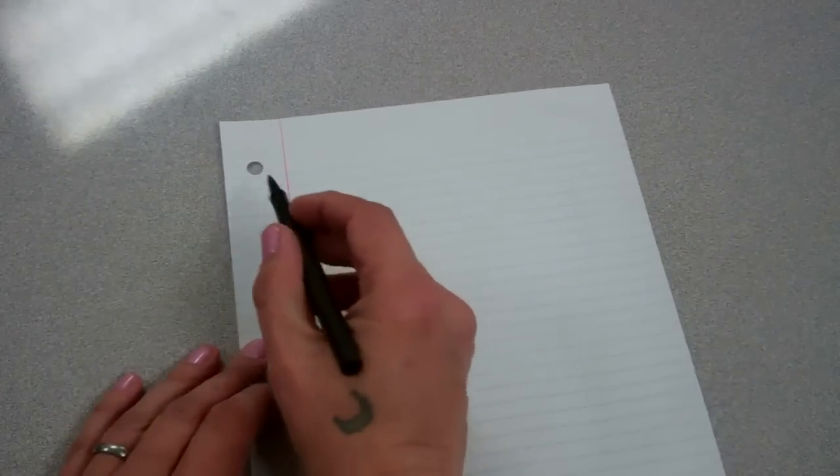I'm going to show you how to do Cornell Method note-taking. The first step is that you have to divide your page into different sections.